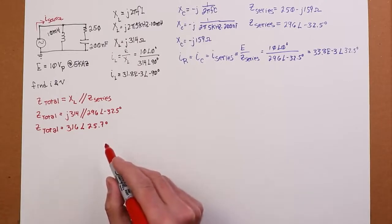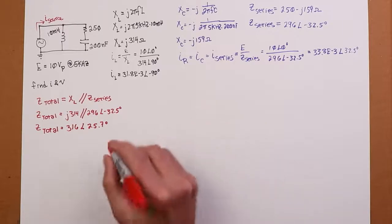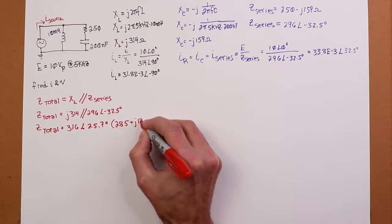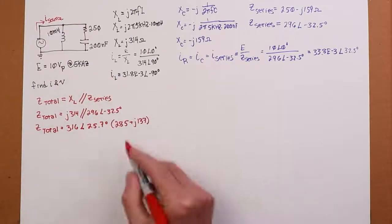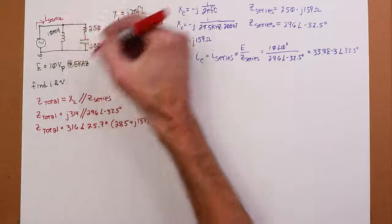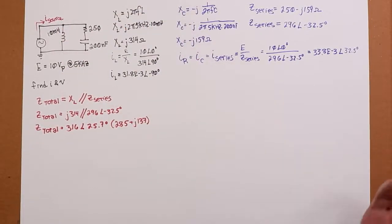Now, this current plus this current should add up to our source current, the current coming out of here. I total or I source, whatever you want to call it. So how do I find that? We could just add them and just sort of say that's KCL. But let's find Z total, because then we can just use Ohm's law on that. So that's a useful thing to do. So Z total, in other words, what the source sees would be the parallel combination of XL and Z series.